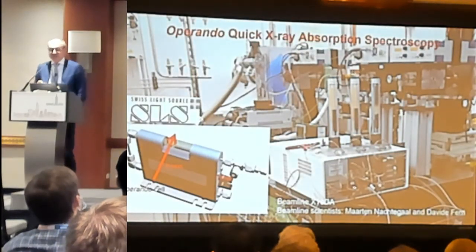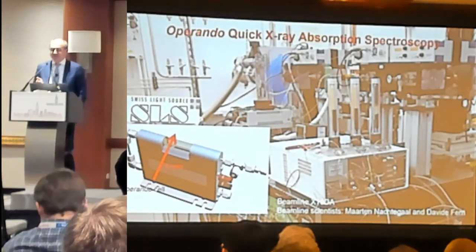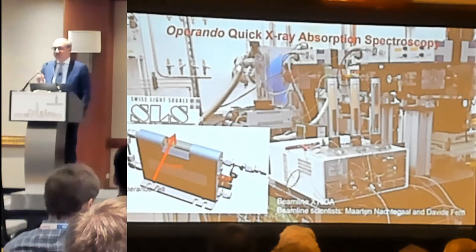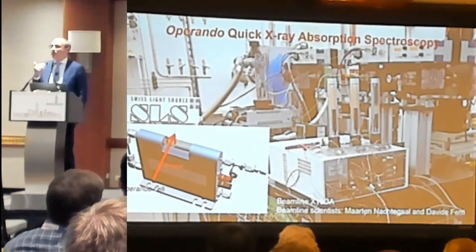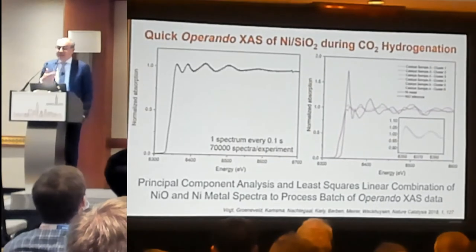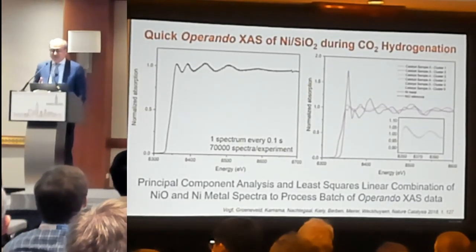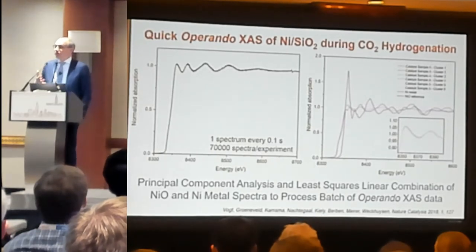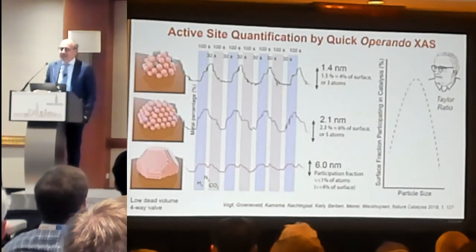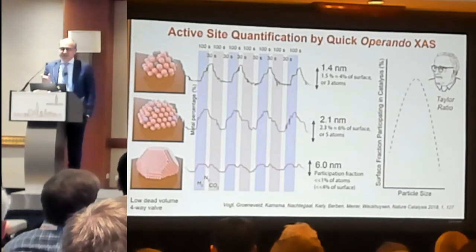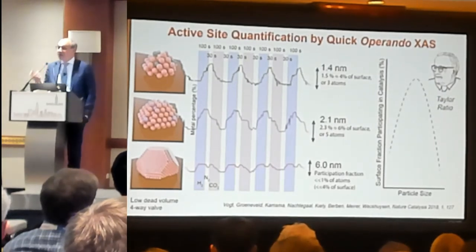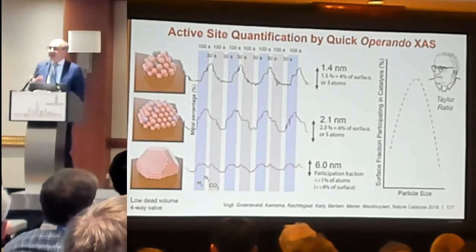I introduce the first operando methodology: quick X-ray absorption spectroscopy. Quick means sub-second, which allows you to make pulses of CO2 and hydrogen — CO2, hydrogen — and see how the system responds. That means you have many spectra which have to be analyzed by chemometric approaches. You can do a linear combination of nickel metal and something which is a nickel oxide or sub-oxide. When you apply pulses of hydrogen and CO2 and see the gases alternating, you see the contribution of metallic nickel going up and down.